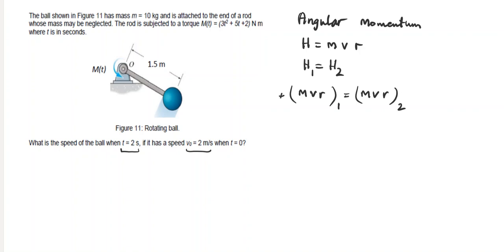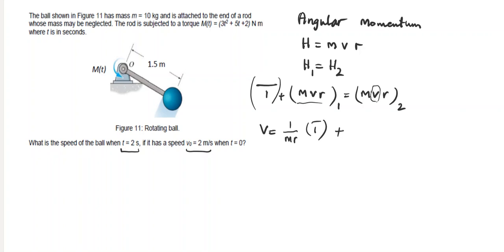The rod is subject to a torque, so we need to account for the torque on one side and find this velocity. For the torque, we need to integrate it with respect to t, using the given upper and lower bounds of integration. I rearrange the formula to get v by itself — dividing both sides by m·r — so v equals one over m·r times the torque integral, plus v1.